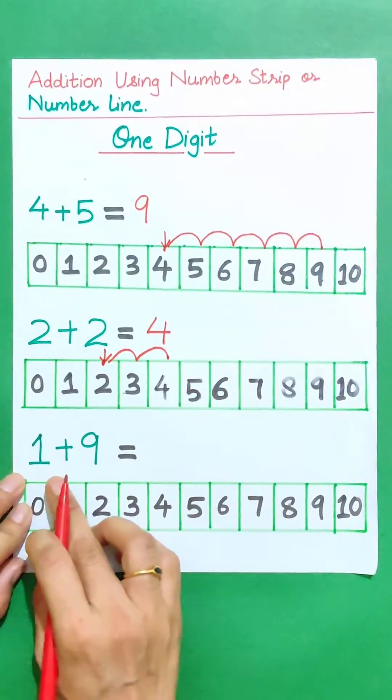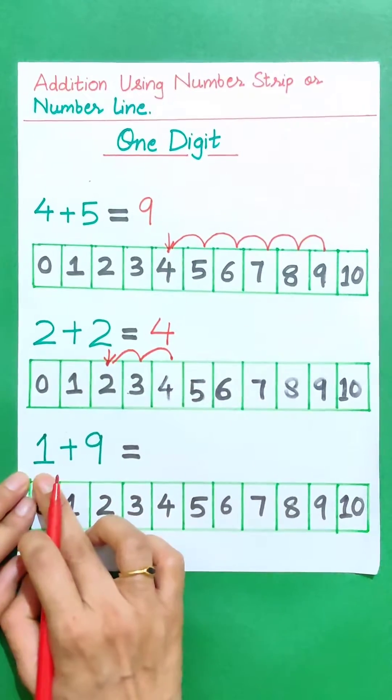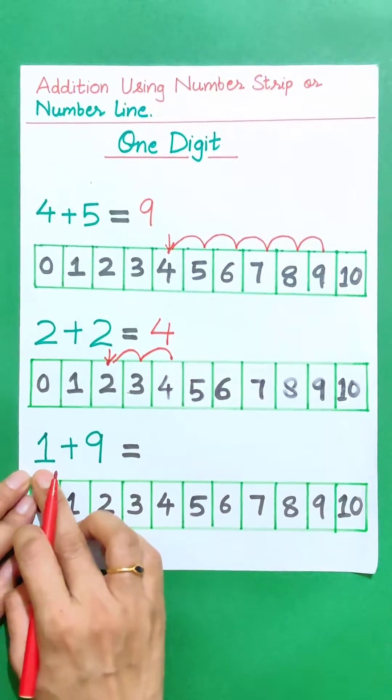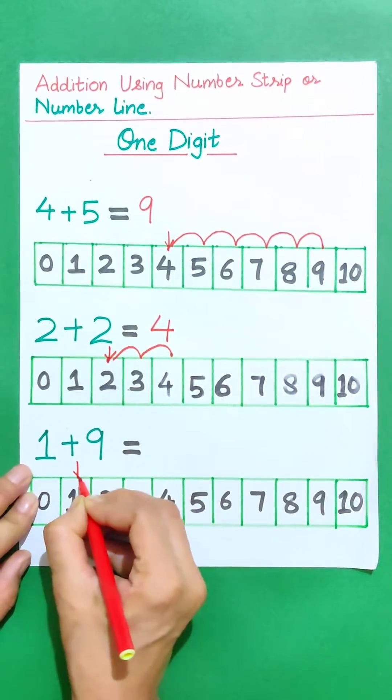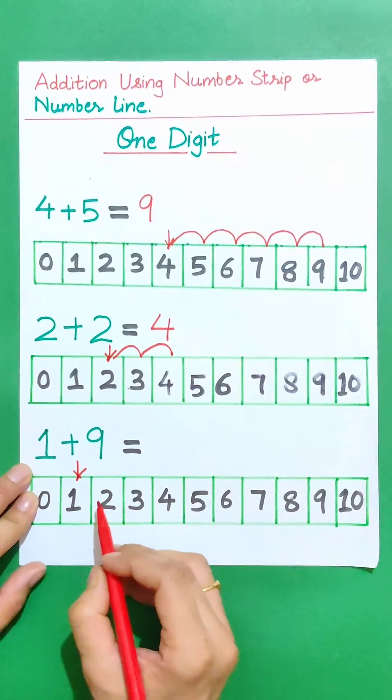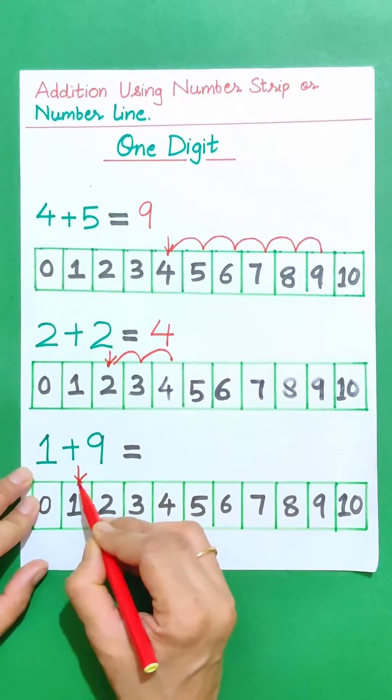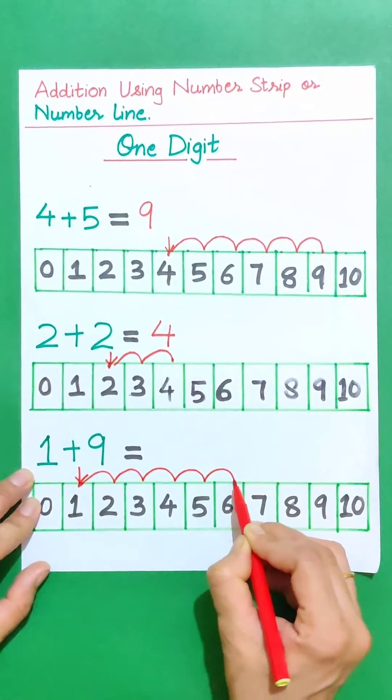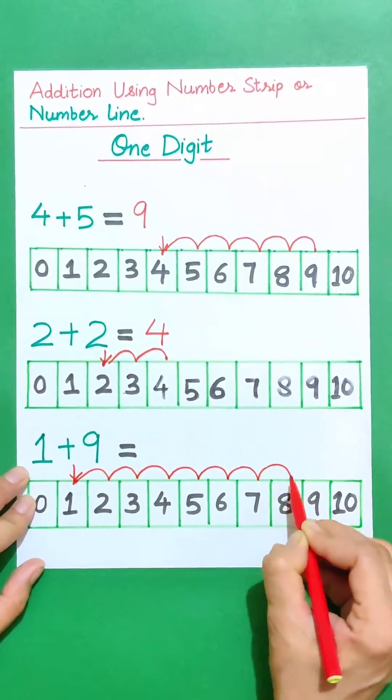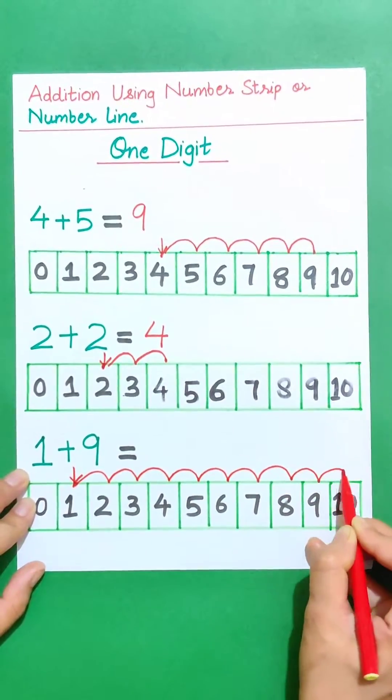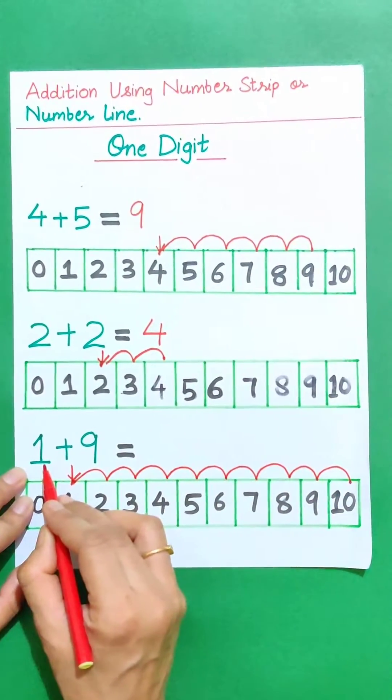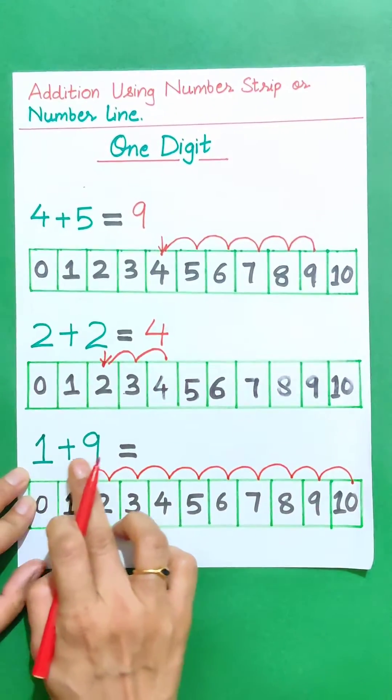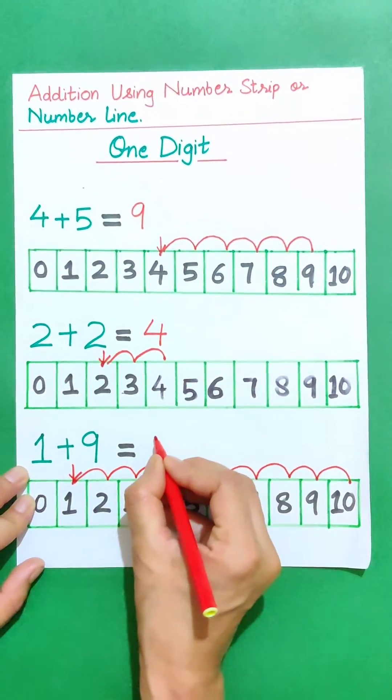Now we will check another example. 1 plus 9. Start from number 1 and jump forward to 9 steps. 1, 2, 3, 4, 5, 6, 7, 8 and 9. So therefore the sum of 1 plus 9 is 10.